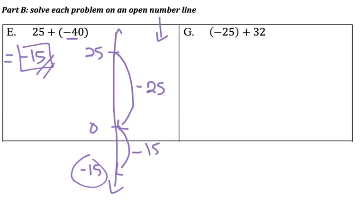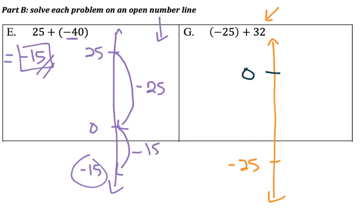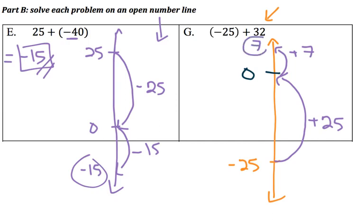For G, we have negative 25 plus 32. This is a regular elevator problem because that second number is positive. We're starting 25 floors in the basement, and since we're adding, we're going to go up a total of 32 floors. So I'm going to go up to 0. Out of 32, I've already gone 25, which means I have another 7 left to go. We would end up 7 floors above ground — that's why the answer is 7.